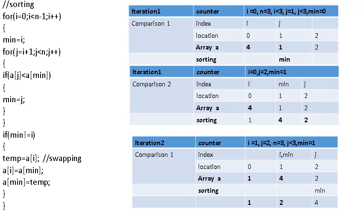Now a[j] is a[2] compared with a[minimum] which is a[1]. a[2] value is 2, a[minimum] value is 1. Since 2 is less than 1 is false, the if part is not executed. j is incremented to 3. 3 is less than 3 is false, so control exits the inner for loop.